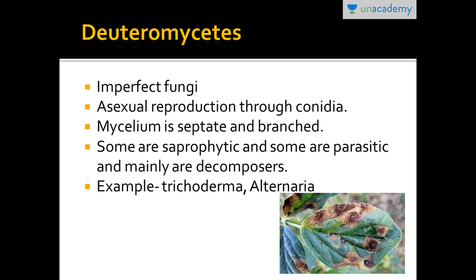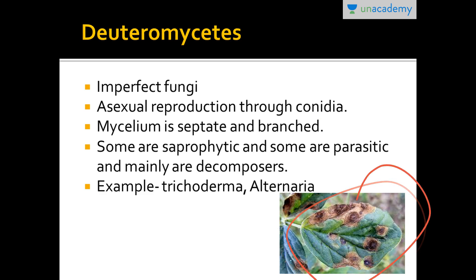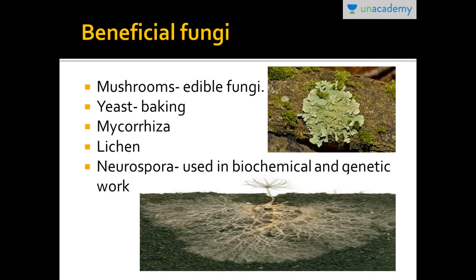Deuteromycetes are known as imperfect fungi because sexual reproduction is absent in them. Asexual reproduction occurs through conidia, and mycelium is septate and branched. Some are saprophytic and some are parasitic. Deuteromycetes mainly function as decomposers.